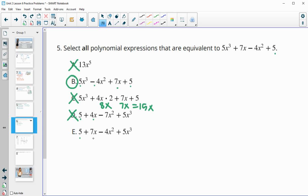5 is fine. Let's take a look for a 7x. And we see that. Negative 4x squared we see. And positive 5x cubed we see. So E is also equivalent.